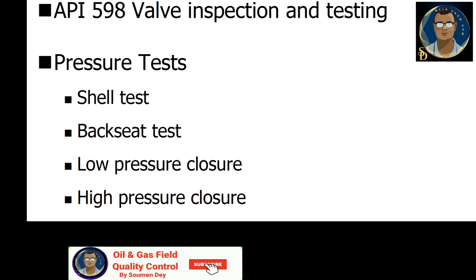API 598 — Valve Inspection and Testing. As per API 598, the valve pressure tests are generally of four types: shell test, which is also termed as body test; back seat test; low pressure closure test; and high pressure closure test.